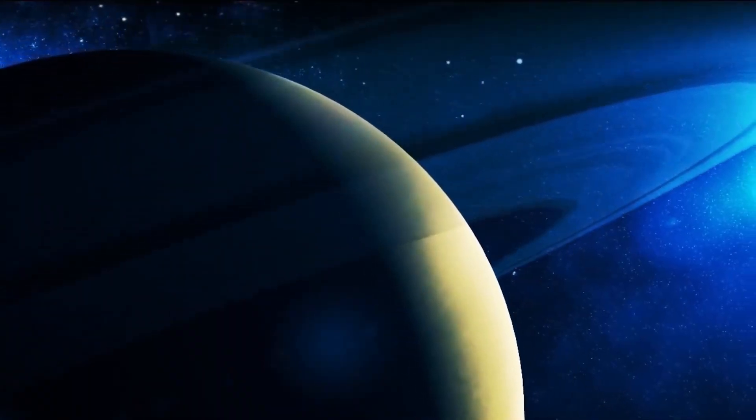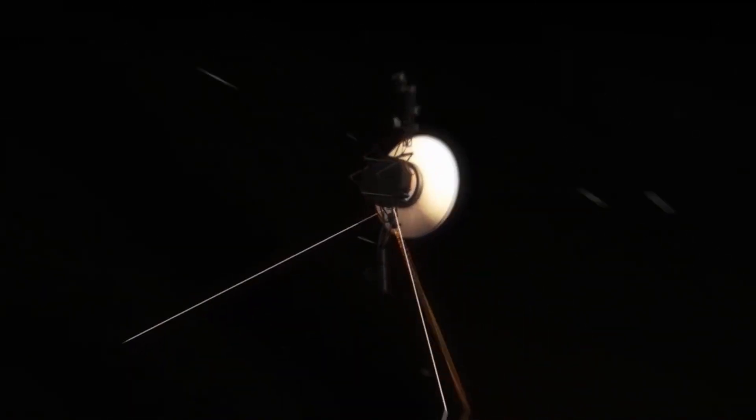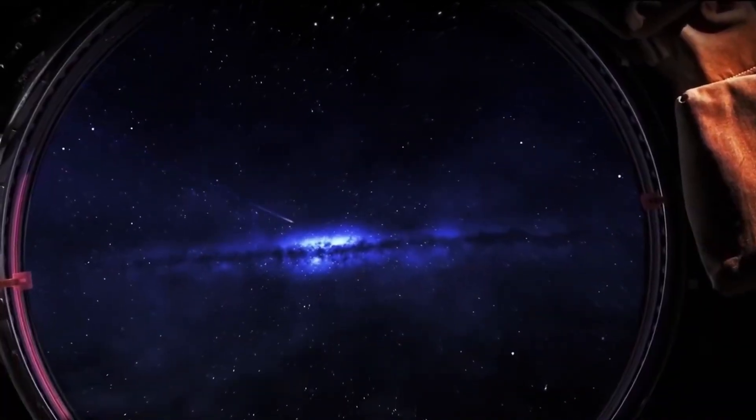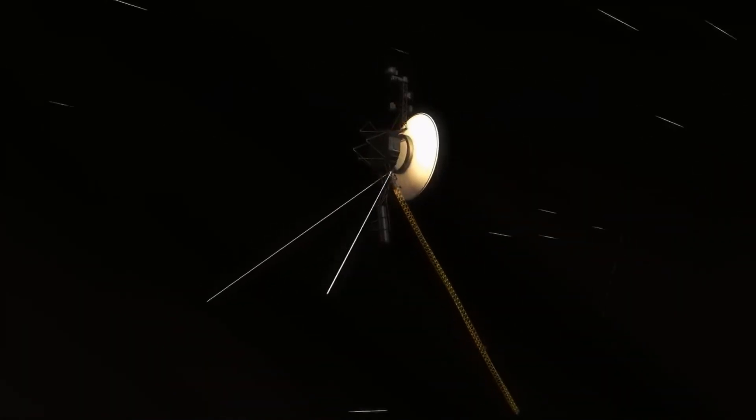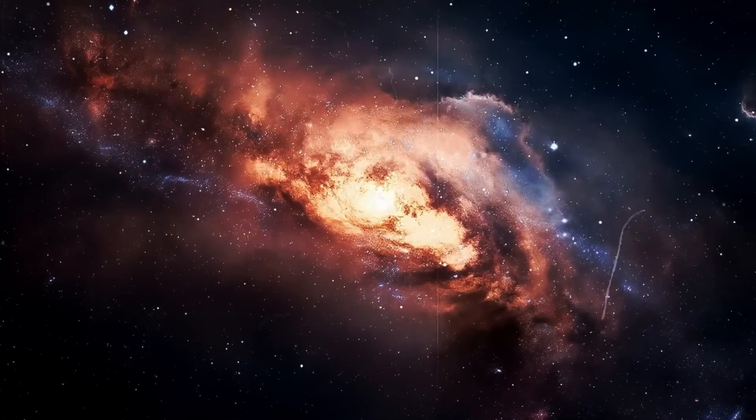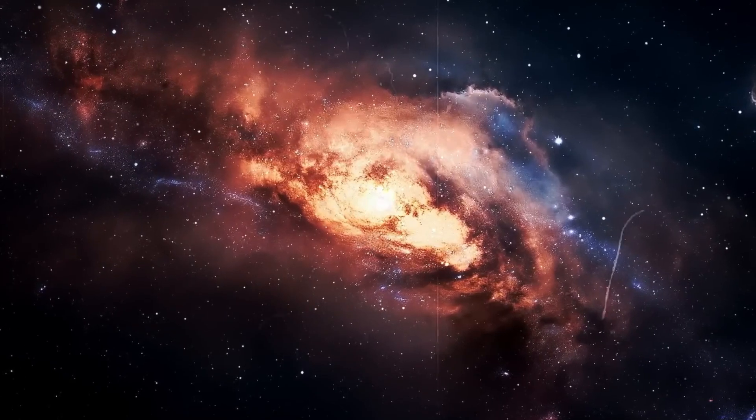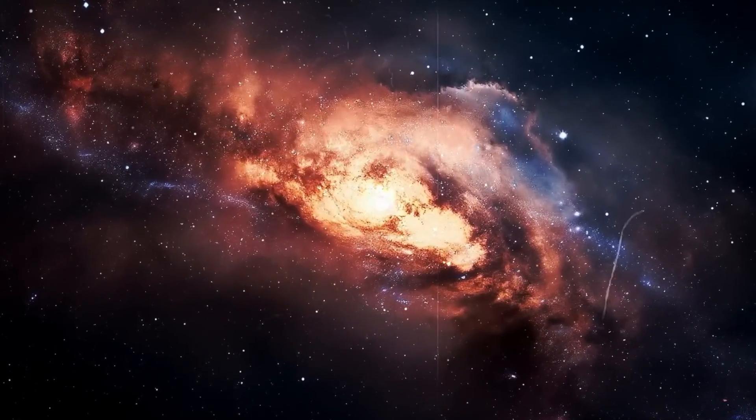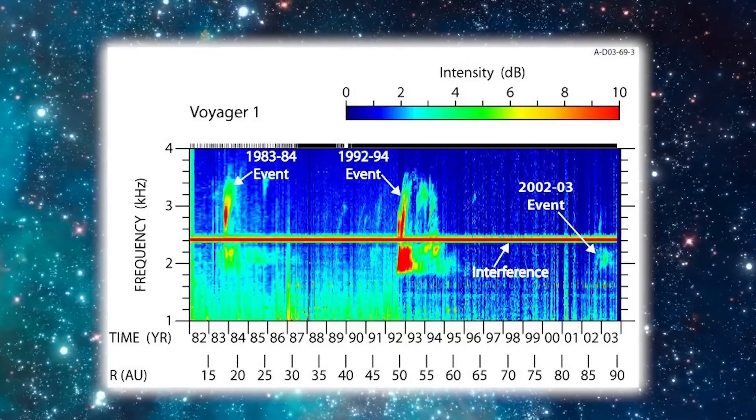And yet, Voyager 1 and 2 have achieved something that neither a smartphone nor any other space probe has ever accomplished. They have ventured into interstellar space. Launched on August 20th and September 5th, 1977, with Voyager 2 leaving Earth before Voyager 1, the probes first examine the four outer planets of the solar system.